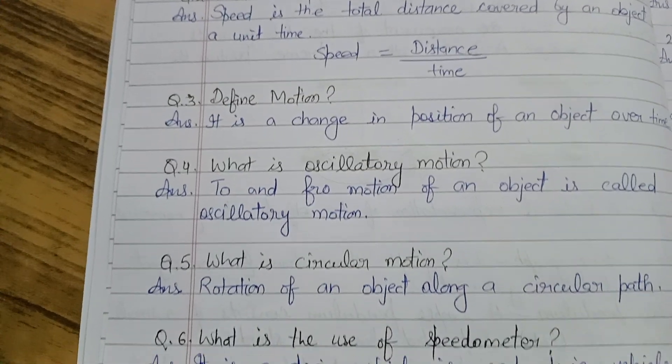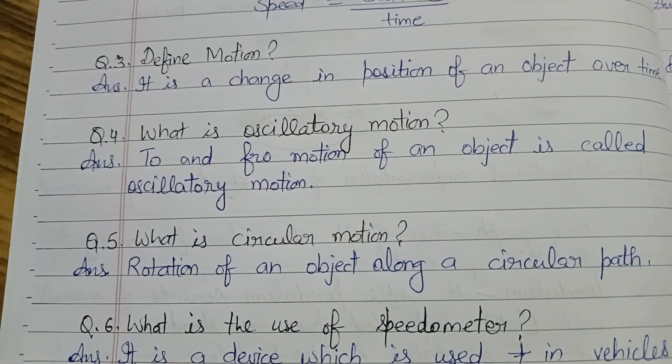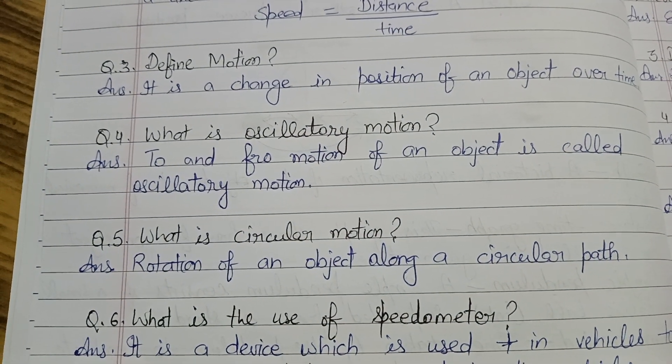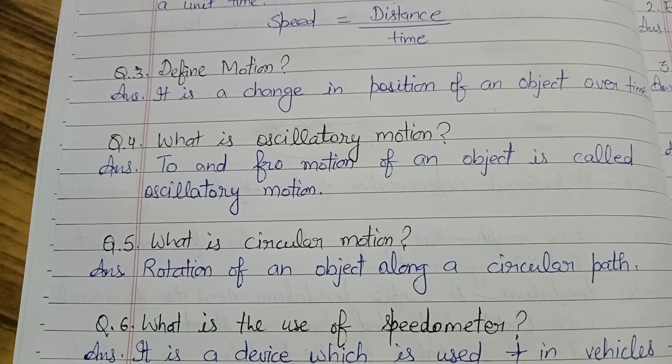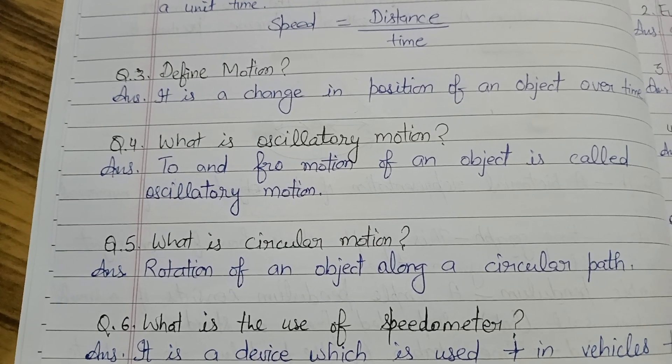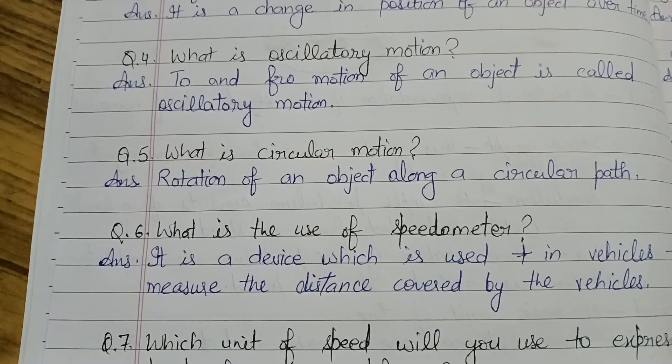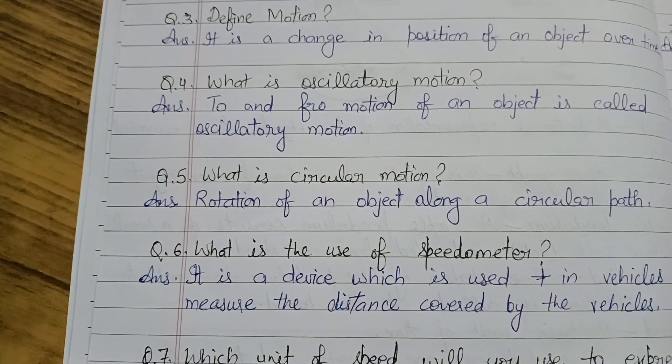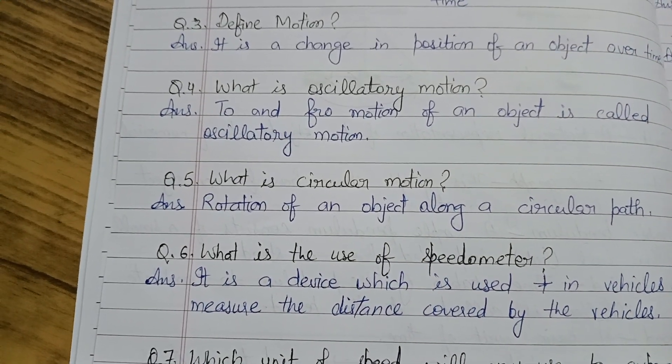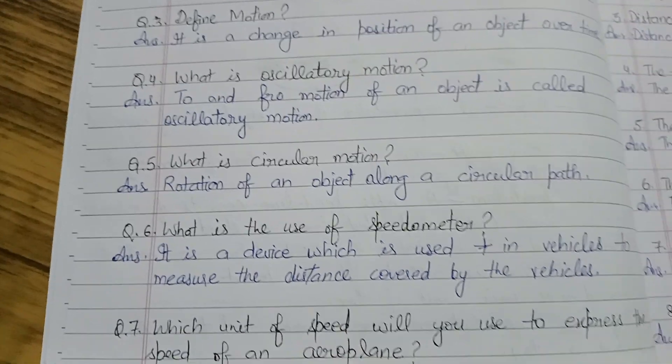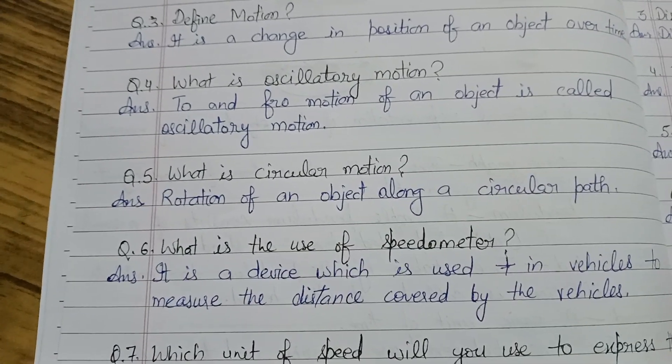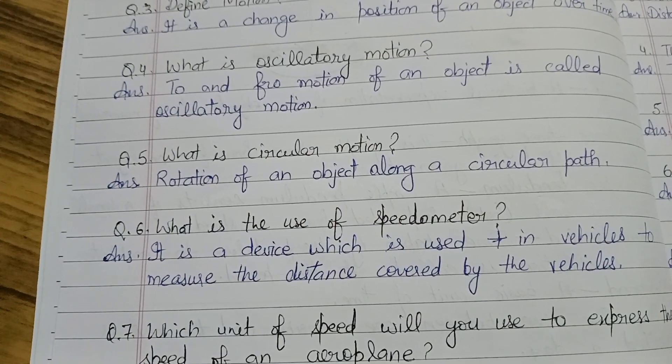To and fro motion. Circular motion - rotation along a circular path. Like the Earth rotates around the Sun, Moon rotates around the Earth - that is circular motion. Use of speedometer - it is a device which is used in vehicles to measure the distance covered by vehicle. Kitna distance cover kiya hai kisi bhi vehicle ne, wo humein kaise pata chalega?